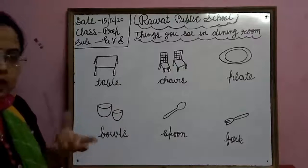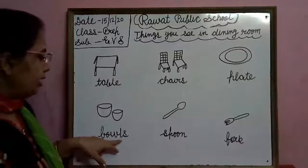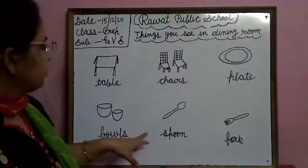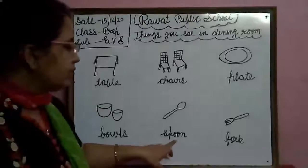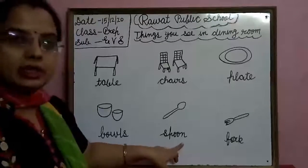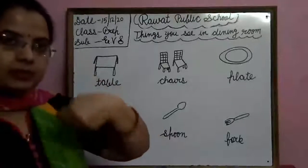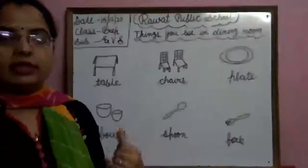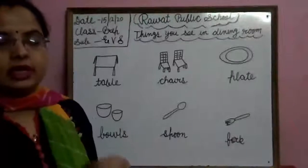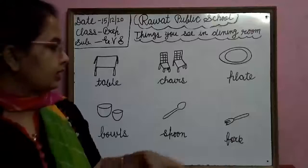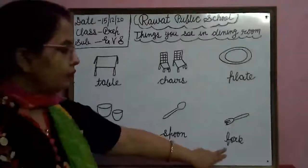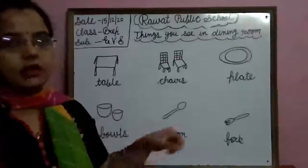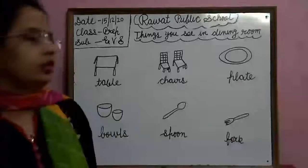कटोरियाँ होती हैं, हैंना? B-O-W-L-S, Bowls. Spoon — S-P-O-O-N. Spoon से हम खाते हैं — rice है, vegetables है, कुछ भी हम spoon से खाते हैं। Fork — F-O-R-K, Fork. काँटा। F-O-R-K, Fork.